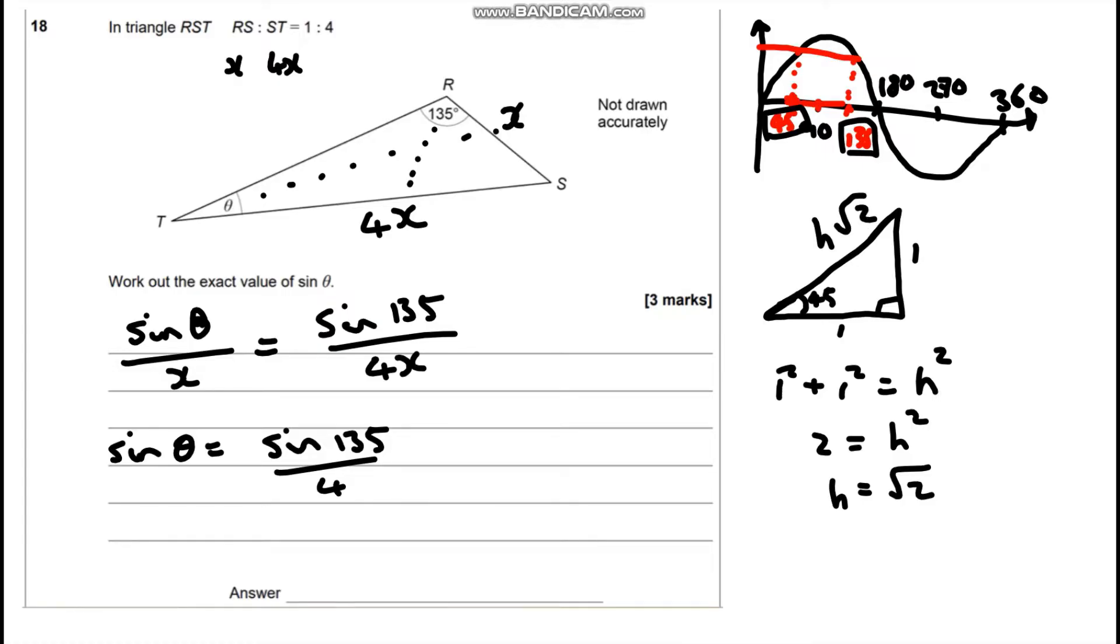So we want sine 45. So we are going to be looking at the opposite over the hypotenuse. So we've got one over root two. And if we rationalize, times both top and bottom by root two, we're going to have root two over two.